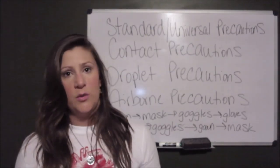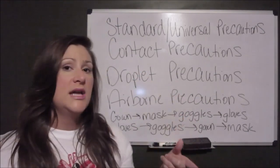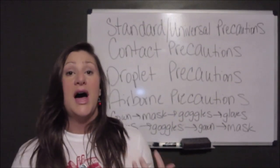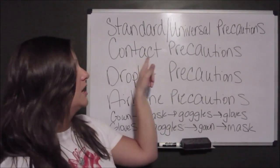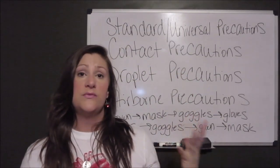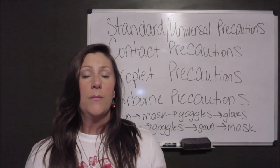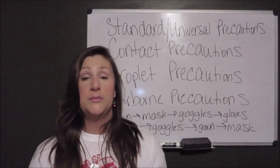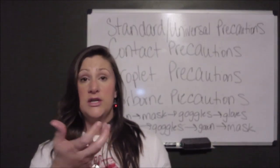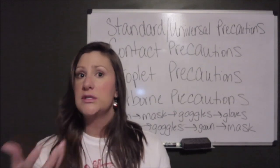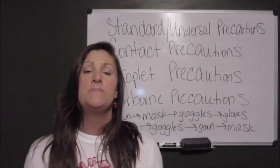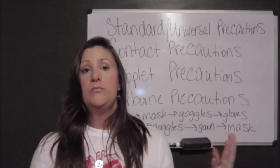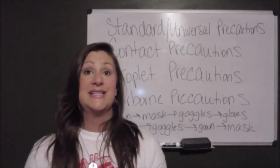Those are precautions applied to every single patient, whether or not they have some sort of infectious pathogen. Now with the next level, we begin what's called transmission-based precautions, or isolation precautions. The first level is contact precautions. Illnesses that fall under contact precautions are patients infected with pathogens that are transmitted via direct contact — either with the infection source itself or something the patient has touched within their environment. Contact precautions consist of gloves and a gown for every time you are in that patient's environment.